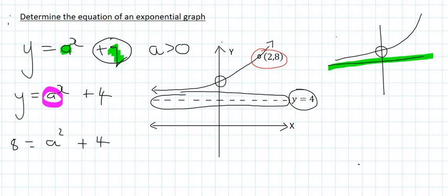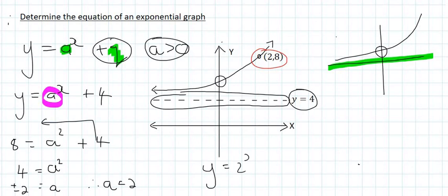So now we're going to solve for a, and that's going to give us a squared. And then we're going to take this 4 over to the left, so it becomes 8 minus 4, which is 4. And so if you had to take the square root, technically you should get plus and minus 2. But now in the question, they've told us that a must be bigger than 0, so a must be positive. So minus 2 is just not going to work, and so therefore a must be equal to 2. And so the final equation of this graph is going to be y equals 2 to the power of x plus 4.